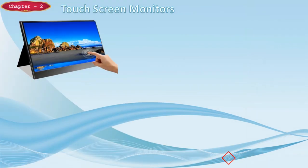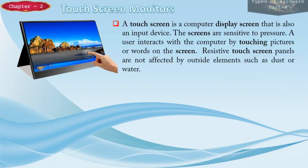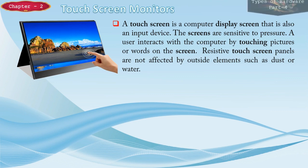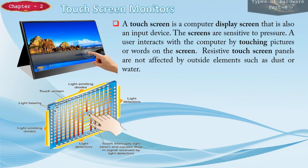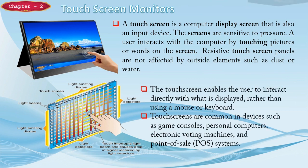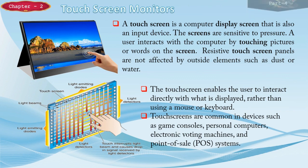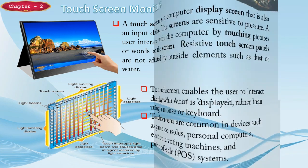A touch screen is a computer display screen that is also an input device. The screens are sensitive to pressure, and the user interacts with the computer by touching pictures or words on the screen. Resistive touch screen panels are not affected by outside elements such as dust or water. In a touch screen, light emitting diodes are present; when we touch the screen, a light beam causes a drop in the signal received by the light detectors, and this way a particular pixel is selected. Touch screens enable the user to interact directly rather than using the mouse or keyboard, and are common in game consoles, professional computers, electronic voting machines, and point of sale (POS) systems.